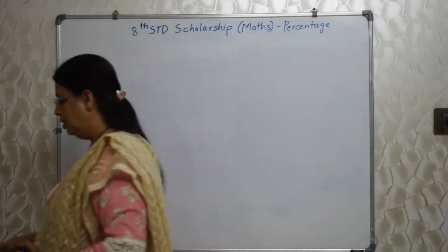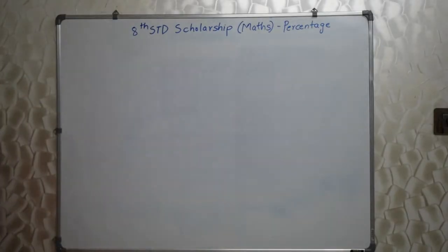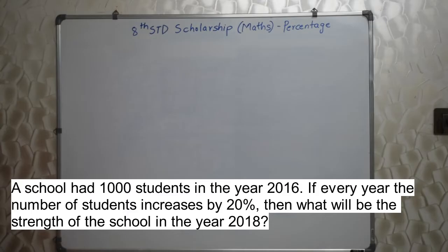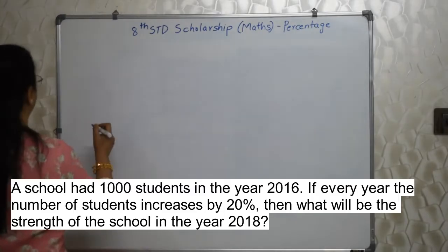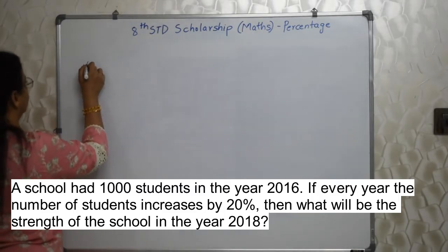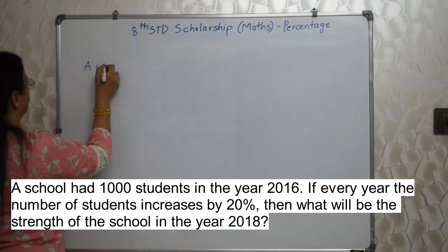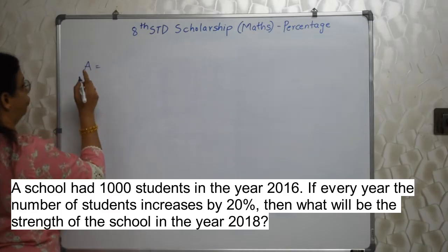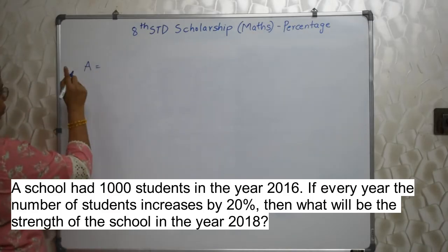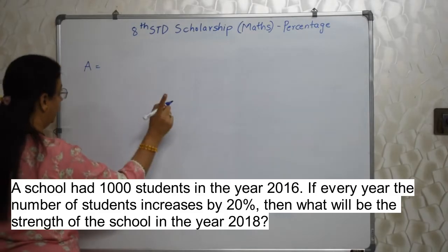The first sum will appear on your screen. A school had 1000 students in the year 2016. If every year the number of students increases by 20%, then what will be the strength of the school in the year 2018? Here you need to use the formula of compound amount — not compound interest, compound amount.